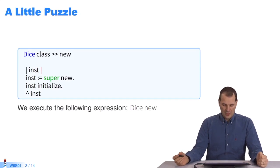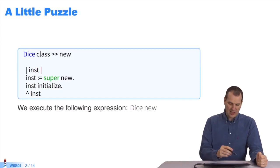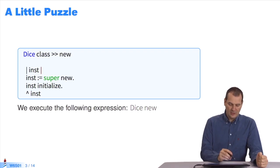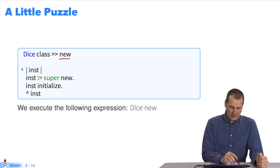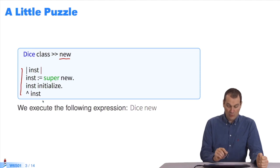Imagine that I defined a method in the Dice class and redefined the new method as follows. Here is new, and here is the code: inst := super new, inst initialize, return inst.